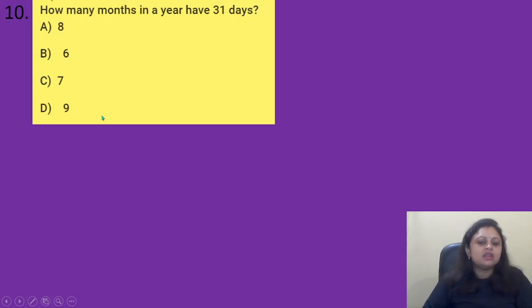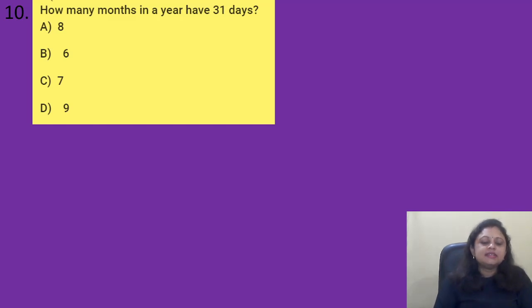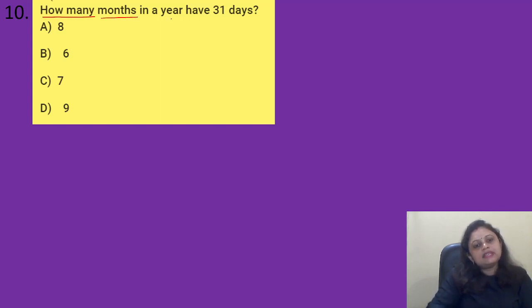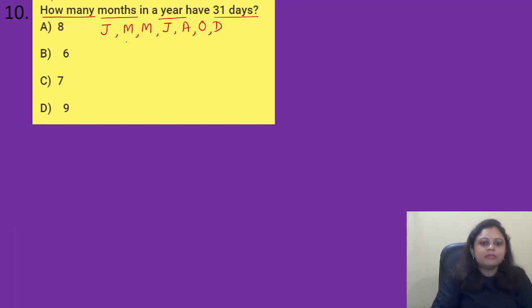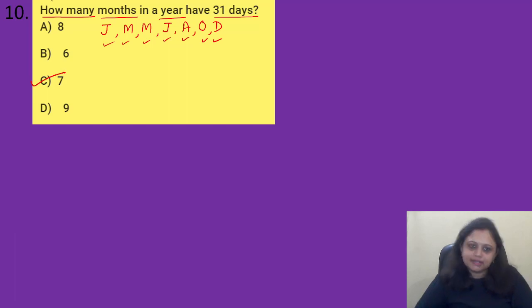Coming to the next question: how many months in a year have 31 days? Option A) 8, B) 6, C) 7, D) 9. The months with 31 days are: January, March, May, July, August, October, and December. Counting them: 1, 2, 3, 4, 5, 6, 7 — that is 7 months. The correct answer is option C, 7.